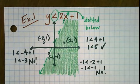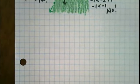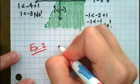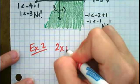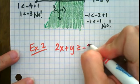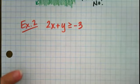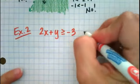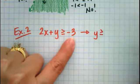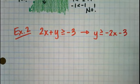Let's try one more example, then we'll move on to systems of inequalities. Example 2: 2x plus y is greater than or equal to negative 3. The first thing to point out is that this is not in slope-intercept form, so we want to rewrite it. We need y by itself, so subtract 2x from both sides — that gives us y is greater than or equal to negative 2x minus 3.